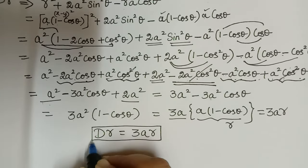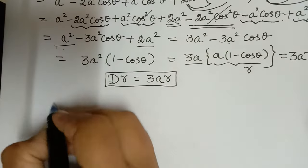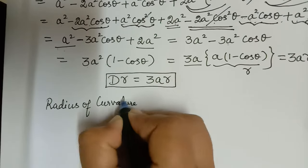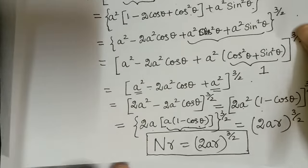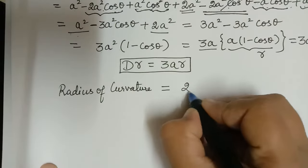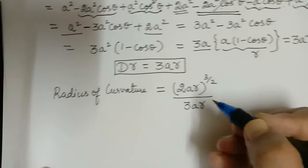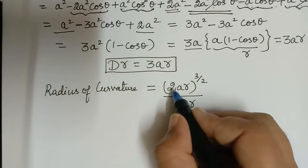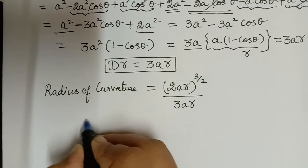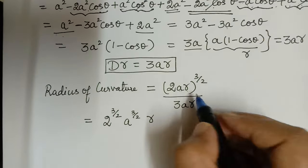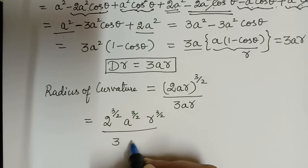Now we have evaluated numerator and denominator separately and substitute into the radius of curvature formula. Therefore rho equals (2ar)^(3/2) divided by 3ar. We can separate the power of 3/2: numerator becomes 2^(3/2) times a^(3/2) times r^(3/2), divided by 3ar.